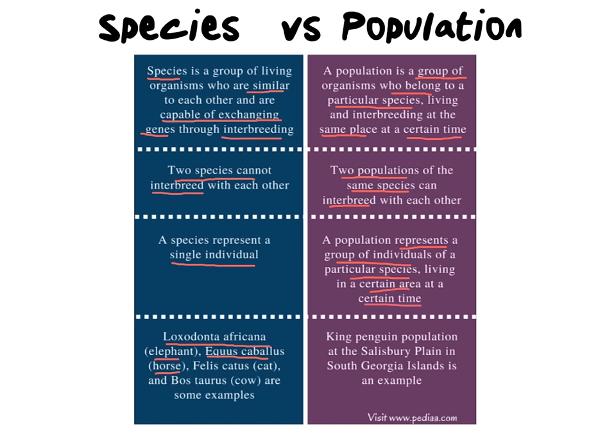More examples other than my African elephant would be the king penguin population, which can be found in lots of different locations — and so those are different populations. To use the elephant example once more: the African elephant can be found in South Africa as one population and in Kenya as another. Then you get the African elephant population and the Asian elephant population. Those two groups of elephants are separate populations but also separate species because if we were to bring them together, they would not be able to reproduce or produce fertile offspring.